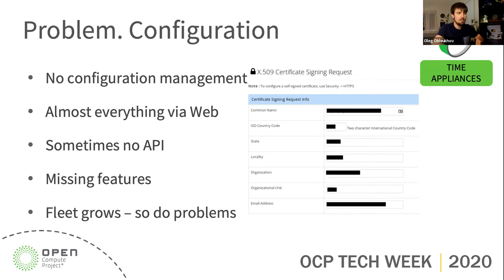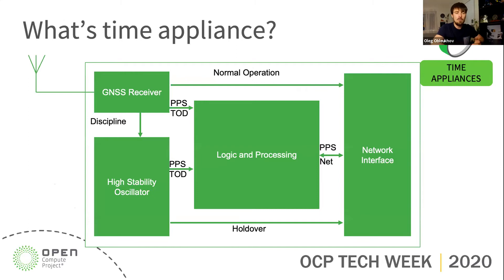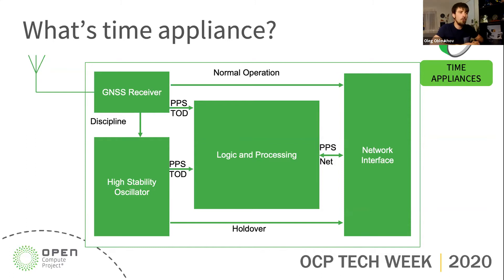At some point, we said enough. How hard is it actually to build a Grandmaster? It needs a GNSS receiver, obviously. Then it needs a network card with a PHC — a physical hardware clock — and a high-stability oscillator. During normal operation the network card will be the primary source, well-disciplined from the GPS receiver. But if GPS gets jammed or something goes wrong, there should be a high-stability oscillator — in our case an atomic clock — which keeps it running. And of course there should be logic deciding how those things switch over.